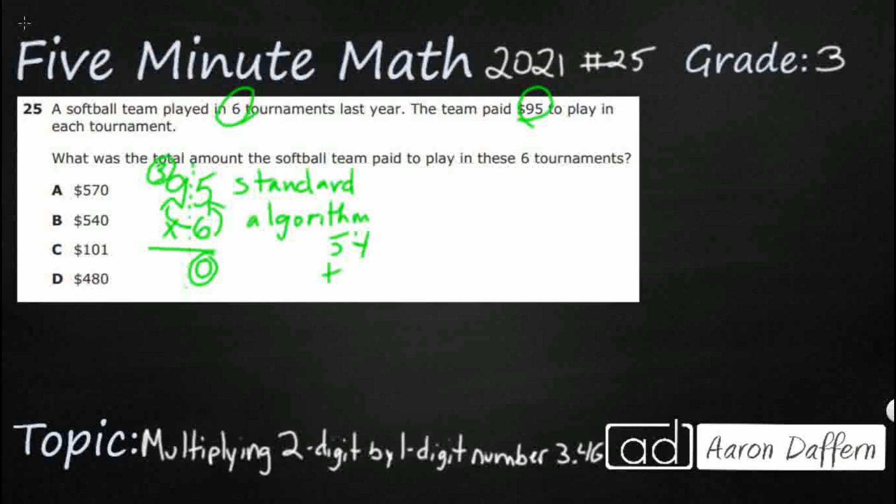That's going to get you 57. There's no other digits to multiply. So we can go ahead and put both digits down. So we've got 570. That's the standard algorithm.